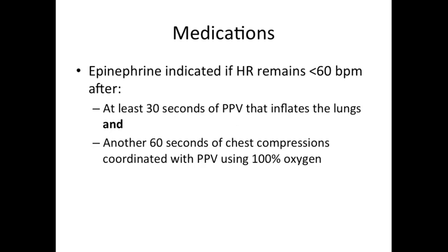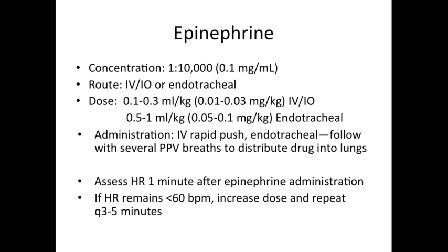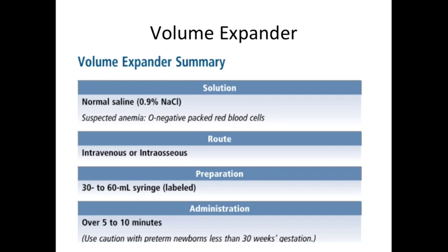Medications such as epinephrine are indicated if the heart rate remains less than 60 after at least 30 seconds of PPV that inflates the lungs and another 60 seconds of chest compressions coordinated with PPV using 100% oxygen. Epinephrine can be given IV or endotracheally; concentrations and dosages are listed here. If administering endotracheally, follow with several breaths of PPV to distribute the medication into the lungs. Assess the heart rate 1 minute after administration. If the heart rate remains less than 60, increase the dose and repeat every 3 to 5 minutes. A volume expander such as normal saline can also be administered if the heart rate is not improving.